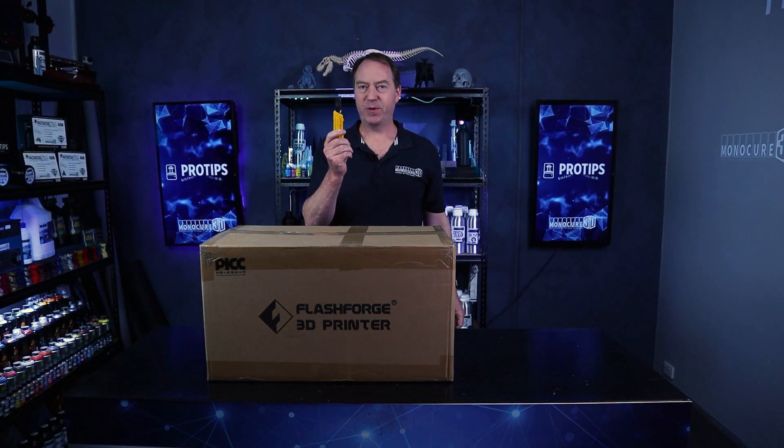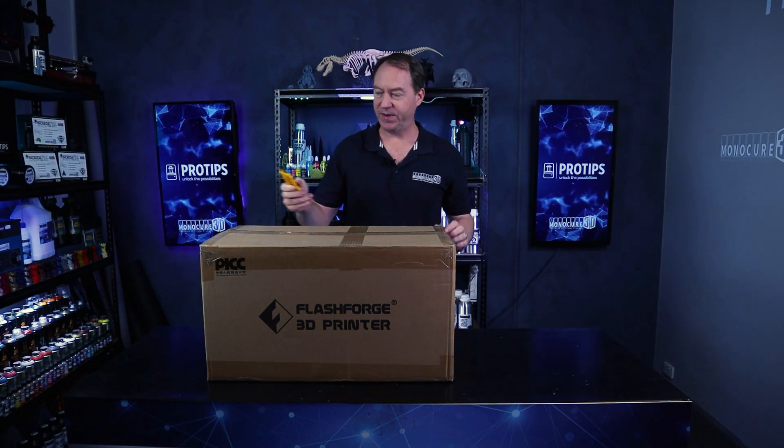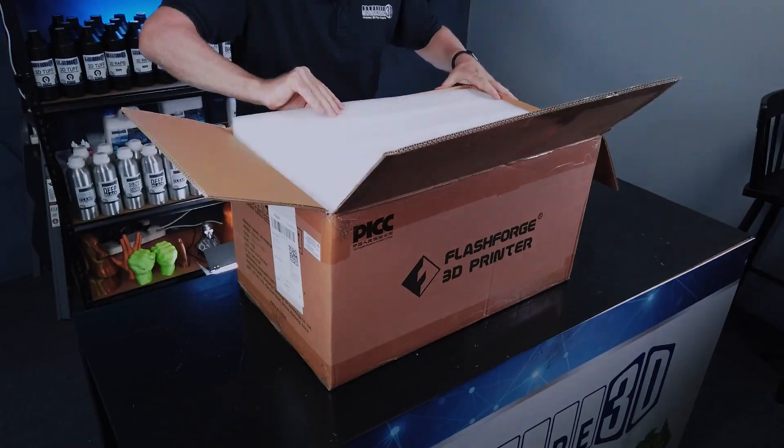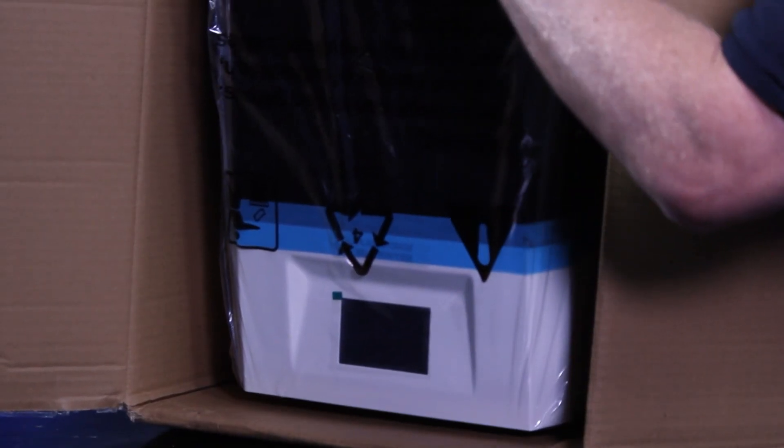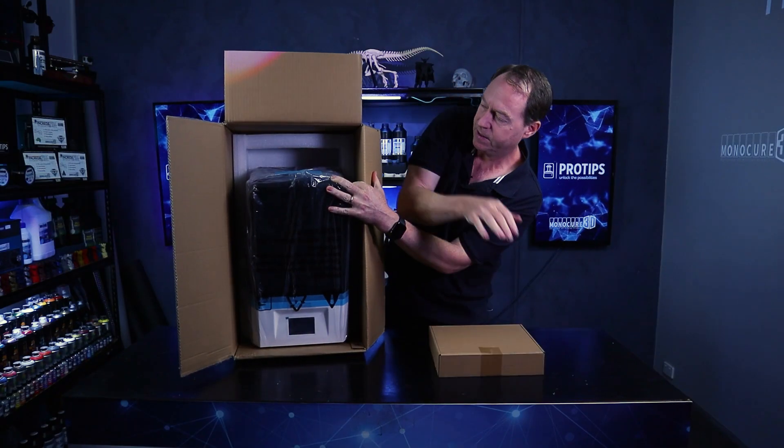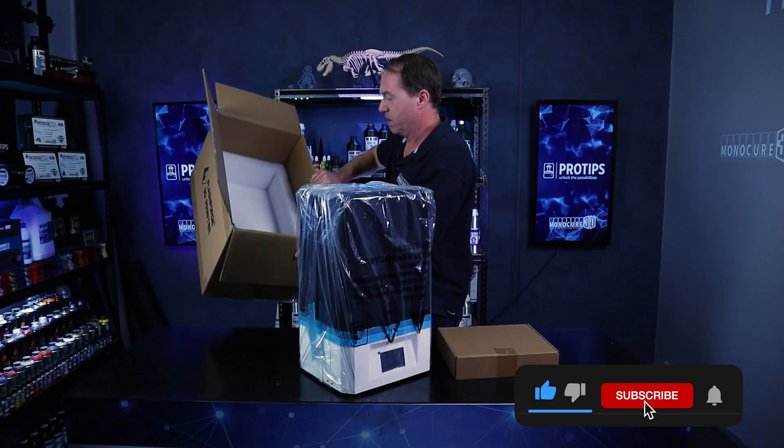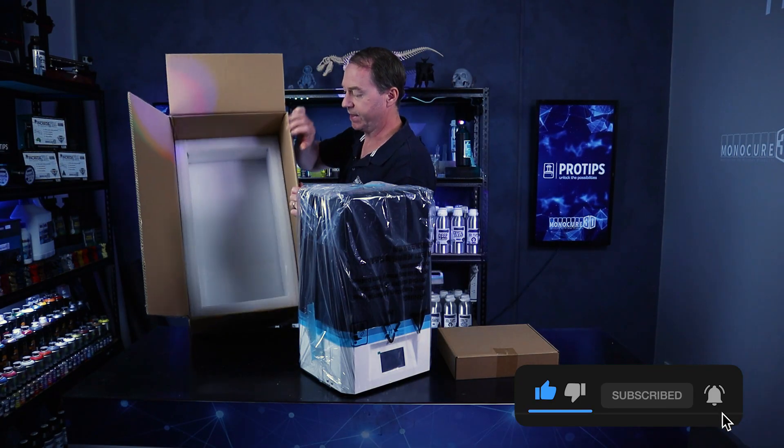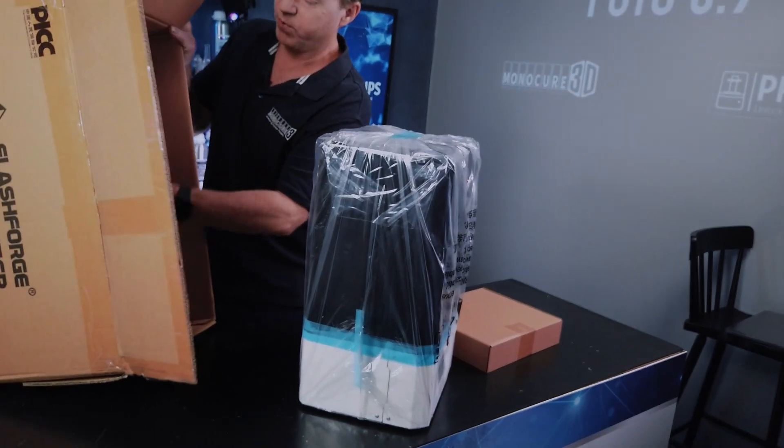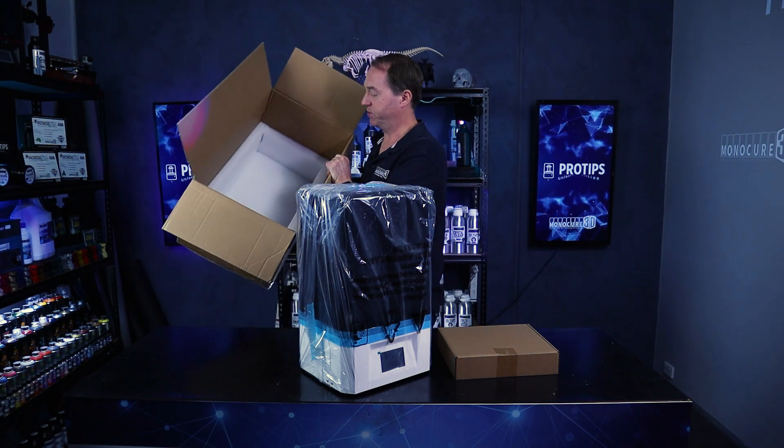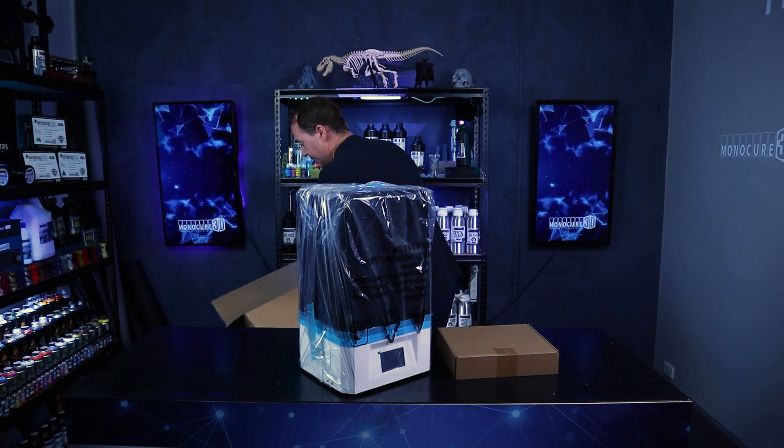Okay guys, moment of truth. I've got the trusty Stanley knife here. Let's open up this box and see what we've got. So we've got the box of goodies sitting at the top there. We'll get that out. Carefully get it out like this. I always like to check to make sure there's nothing in the box. Sometimes they can put build plates or instructions and things in there, but it doesn't look like there's anything in there.